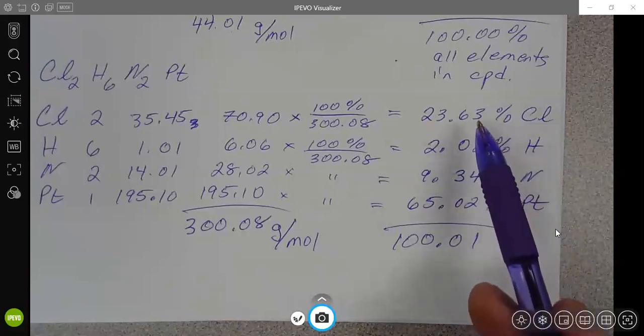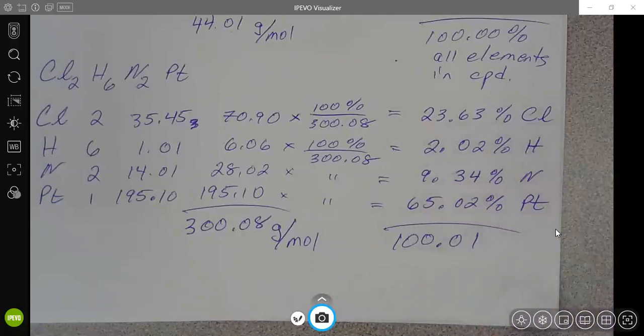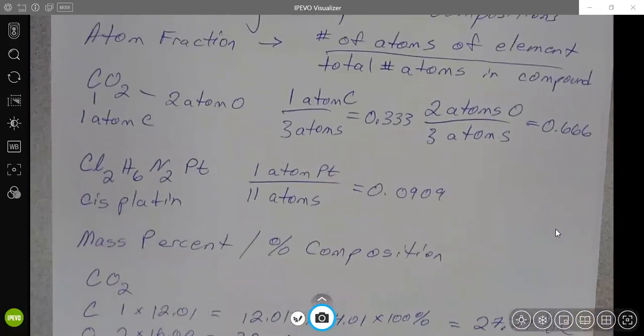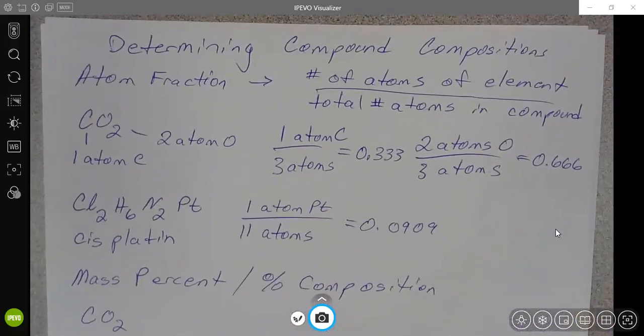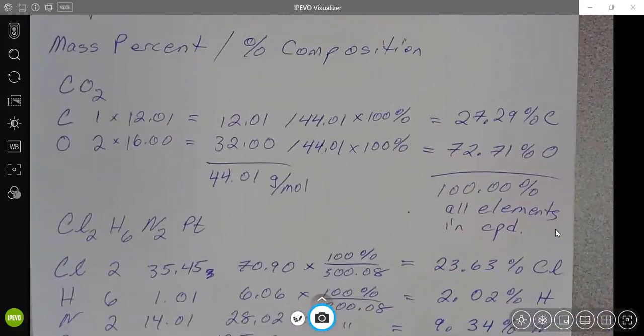Again, this is where maybe keeping a few extra digits beyond what you would really need would be useful. But we're not too worried about it as long as it comes out pretty close to being 100. So I hope this helps you know how to calculate percent compositions, both atom fractions and actual percent compositions and mass percents.